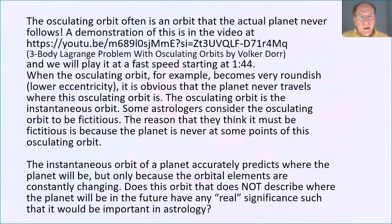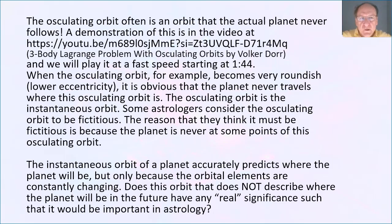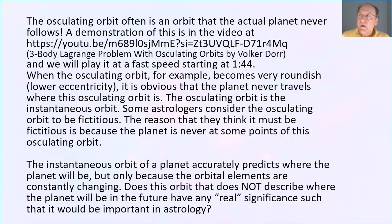Hello again, my friends. The question is: is the osculating orbit of a planet meaningful? And specifically, is the osculating orbit of the moon meaningful in terms of understanding the path of the planet? So let me say that again — is the osculating orbit of the moon a good representation of the path of the moon? This is the question.